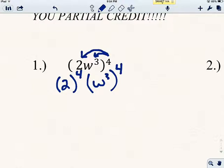And so 2 to the fourth, I can do that on my calculator, or I can just think of it as 2 times 2 times 2 times 2. And so 2 times 2 is 4, 4 times 2 is 8, and 8 times 2 is 16. So that's 16.